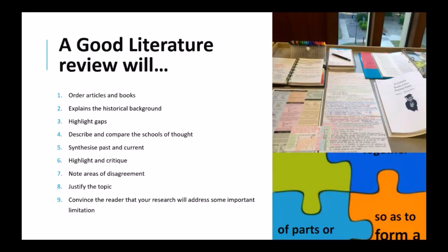How do we separate a good literature review from a poor one? A good literature review will order articles and books to focus on unresolved debates, inconsistencies, tensions, and questions in a particular research field. It will explain the historical background to a topic, including seminal work — who came up with a particular idea and who did groundbreaking research. You highlight gaps in existing research and describe and compare the schools of thought on an issue. Criticality must come into your literature review.